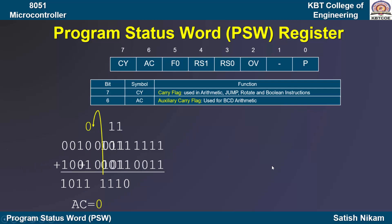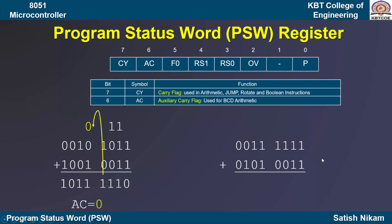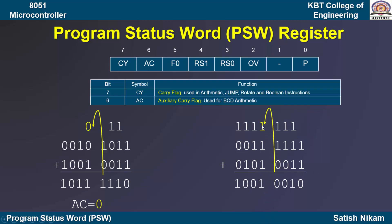Let us consider another example. If you perform the addition of these two numbers, this will be the result. In this there is a carry generated from D3 bit to D4 bit, meaning there is a carry from the lower nibble to the higher nibble. In this case the auxiliary carry flag will be 1.